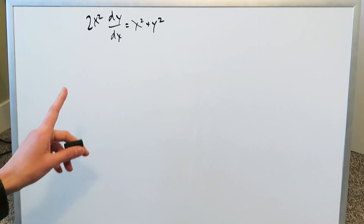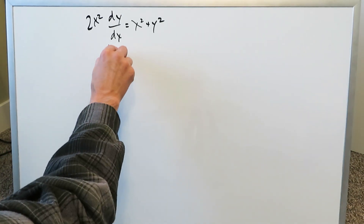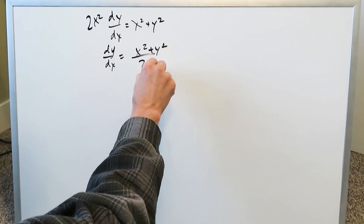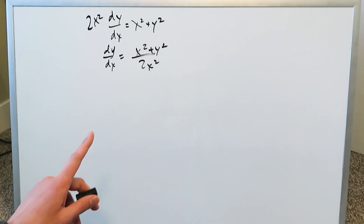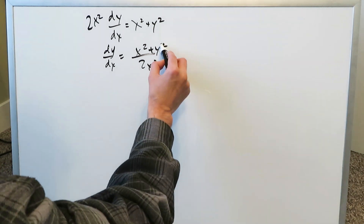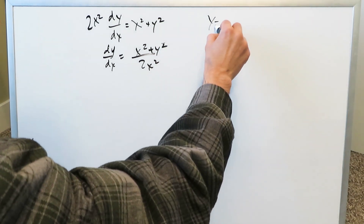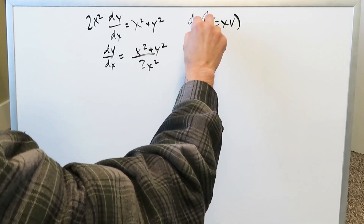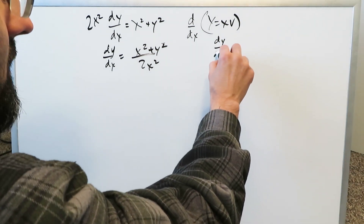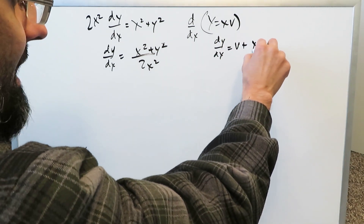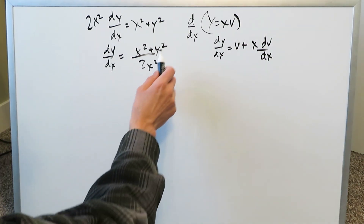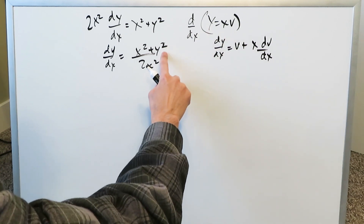Let's solve the second example — a homogeneous first-order differential equation. Taking dy over dx, pushing everything to the other side gives x squared plus y squared over 2x squared. It's homogeneous because every term has the same degree — everything is degree 2. You have to use y equals vx; differentiating gives dy over dx equals v plus x dv over dx, which will come into play shortly.